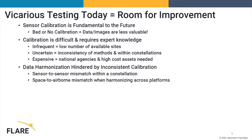Because data calibration is inconsistent, there is a problem with data harmonization. Sensor-to-sensor mismatch within a constellation, and space-to-airborne mismatch — even if you have multiple theoretically identical satellites, it's hard to get them to match up correctly without good calibration. Going from above the atmosphere to in the atmosphere can be very problematic in terms of getting calibrations right across platforms.